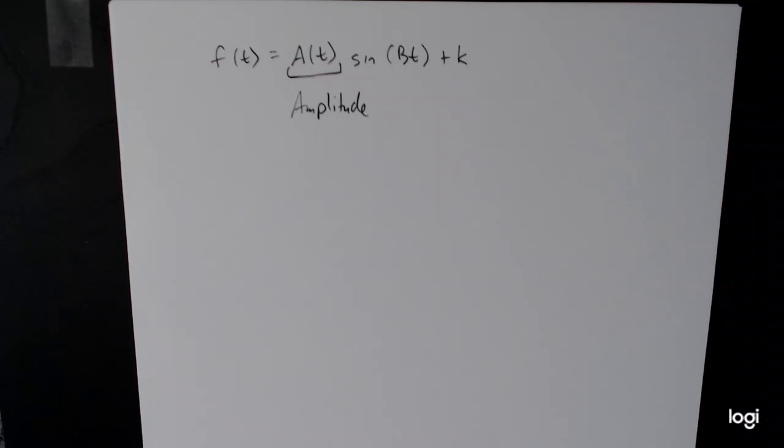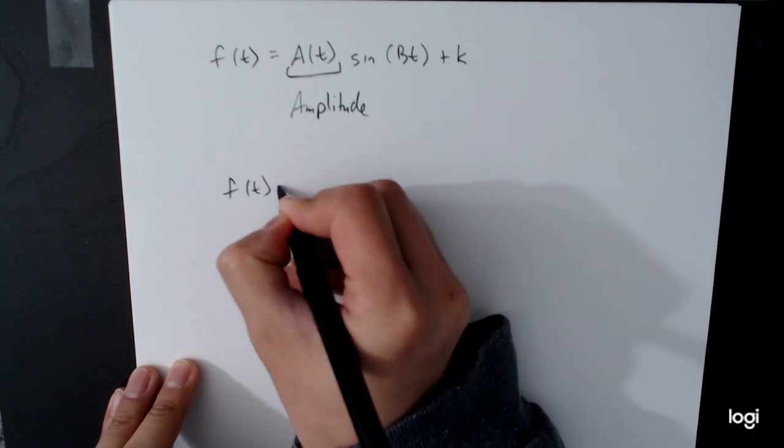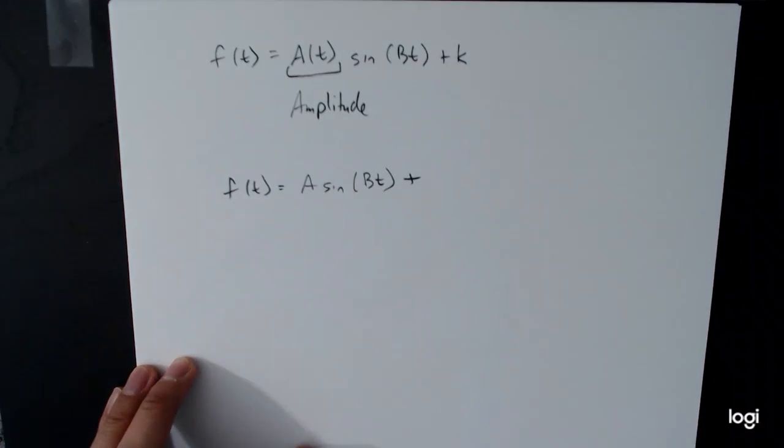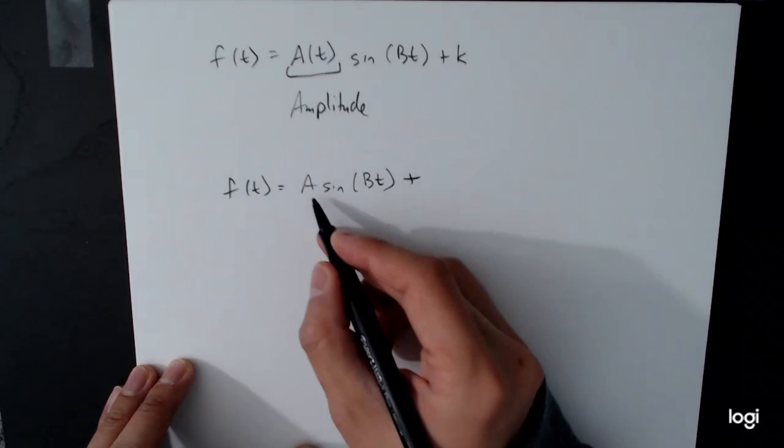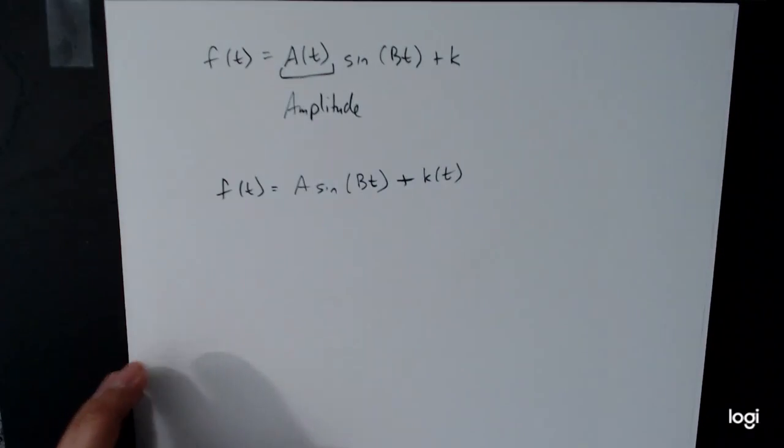The last thing we need to talk about is what would happen if instead of varying the amplitude, we instead varied the midline. For this, what we're going to do is instead of our amplitude being a function, we're now going to have this k be a function. What does that mean? Well, all this is doing is changing the underlying midline behavior.